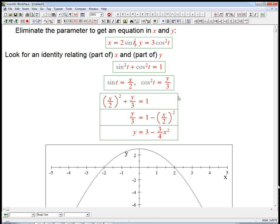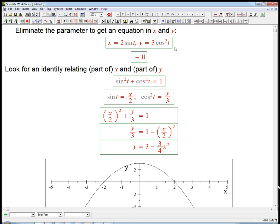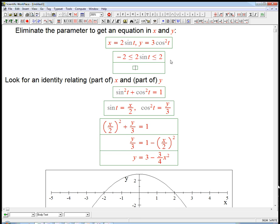Sine t is between minus 1 and 1. Let me put that in here. Minus 1 and 1 are the boundaries for sine t. And so x, which is 2 sine t, is going to be between minus 2 and 2. And cosine squared, that's between 0 and 1 because it's squared. And so y is going to be between 0 and 3.